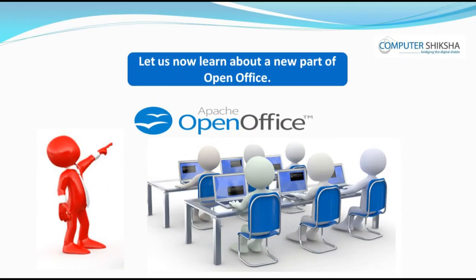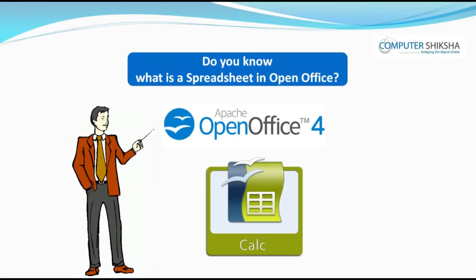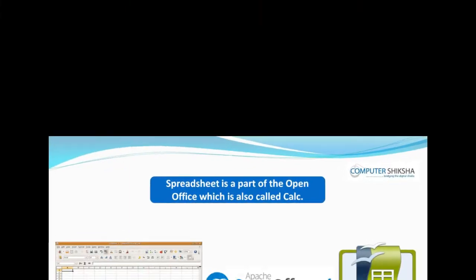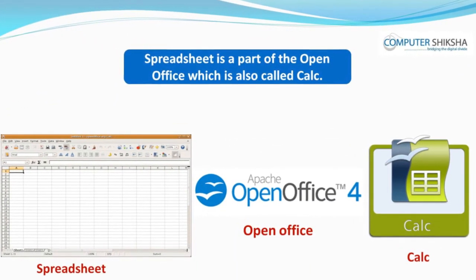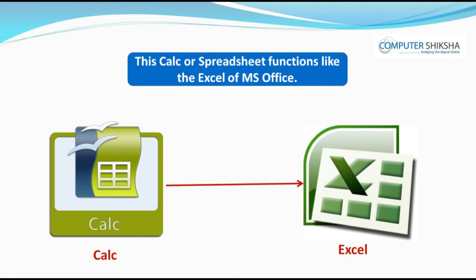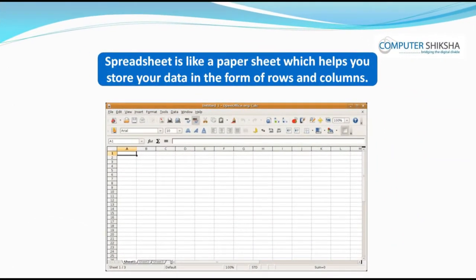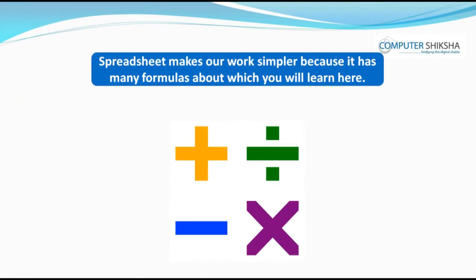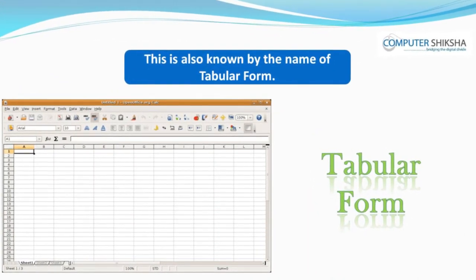Let us now learn about Spreadsheet. Do you know what is a Spreadsheet in OpenOffice? Spreadsheet is a part of OpenOffice which is also called Calc. This Calc or Spreadsheet functions like the Excel of MS Office. Spreadsheet is like a paper sheet which helps you store your data in the form of rows and columns. It has many formulas and is also known by the name of Tabular Form.